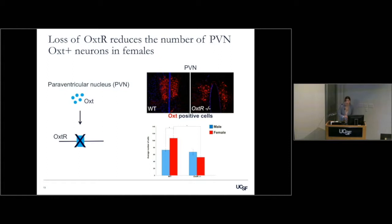Comparing wild-type and mutant animals, we actually see a sex-specific difference in the numbers of cells producing oxytocin — stained in red here. This is specifically in the females. So not only is loss of the oxytocin receptor affecting levels of activity in specific behavioral contexts, but it also produces an anatomic and architectural difference throughout development in the cells producing the signal for the receptor.